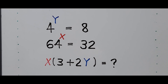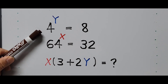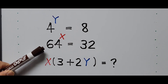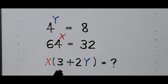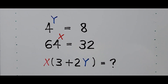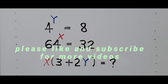Welcome to Cassiano Easy Math. This video is about solving an algebraic expression with the conditions: 4 raised to y equals 8, 64 raised to x equals 32, and we're going to find the value of the algebraic expression x times the quantity 3 plus 2y. For those new to my channel, please like and subscribe for more videos.